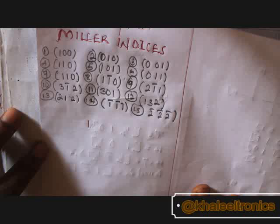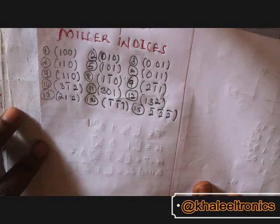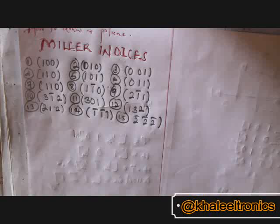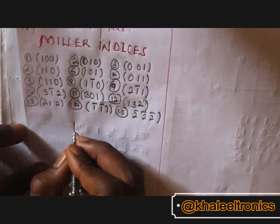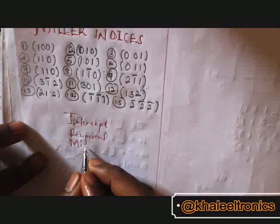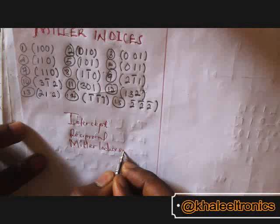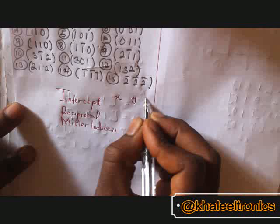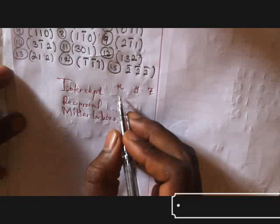Welcome. Here we are going to solve crystallographic plane problems. Let's start with question number one, which asks to find the Miller indices direction for (100). The procedure involves intercept, reciprocal, and Miller indices steps. For intercepts we have x, y, and z.